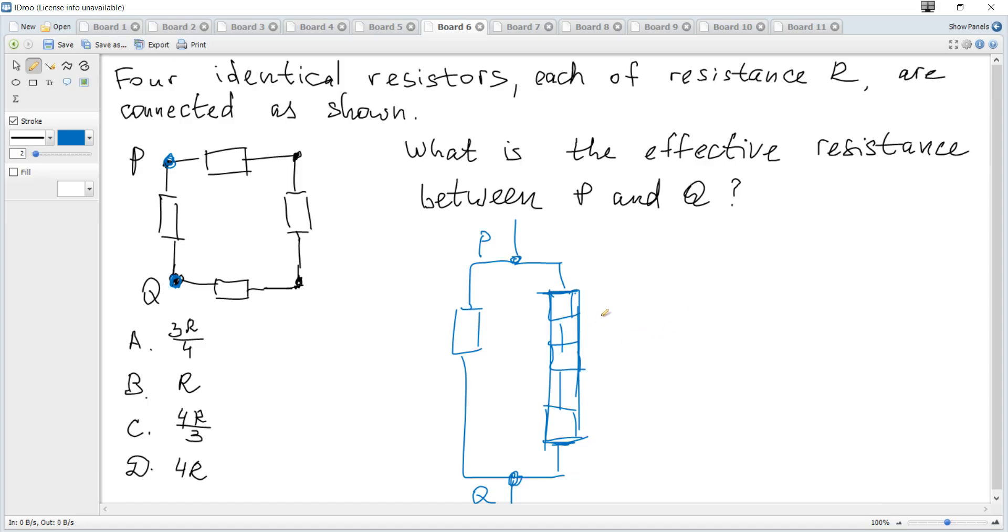We can consider them as one but of resistance 3R and this has resistance of R. And then, this one and this one are in parallel.